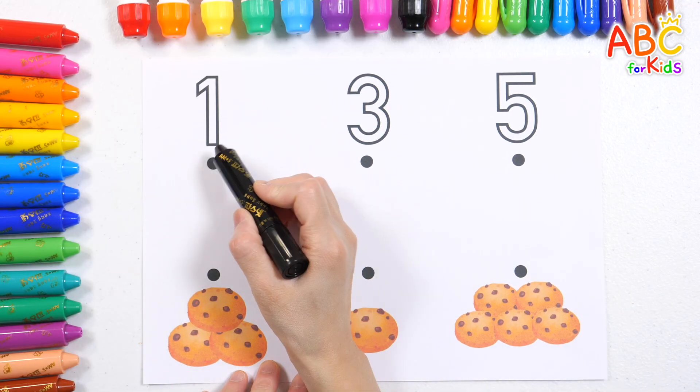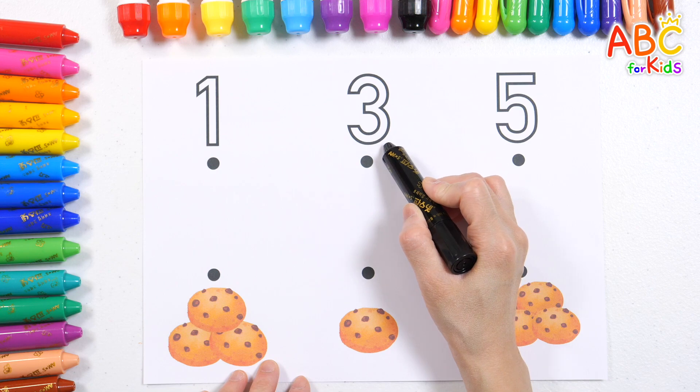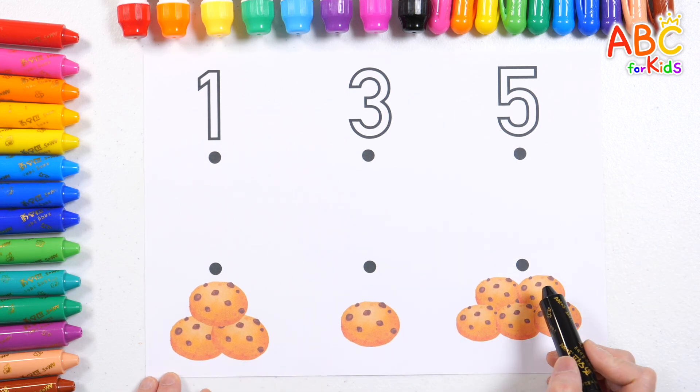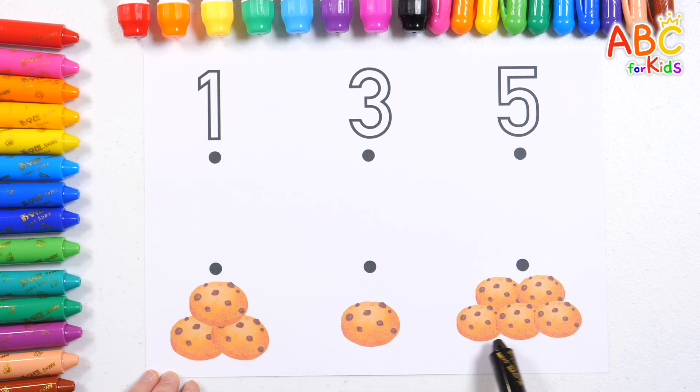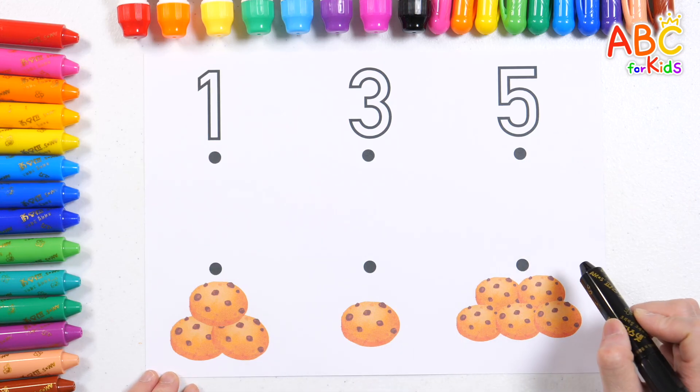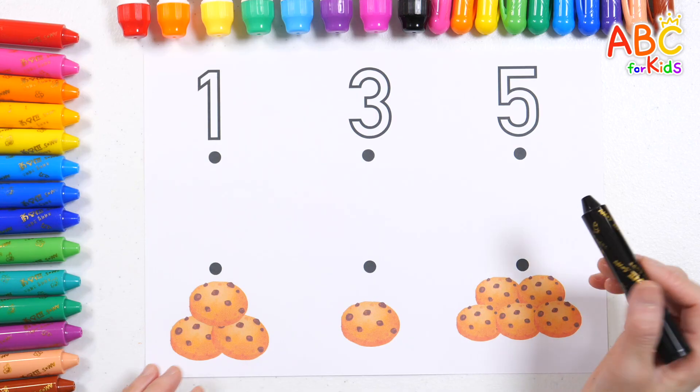We have the numbers one, three, and five! And there are pictures of cookies below! Let's write the number and match it to the right number of cookies with a line!